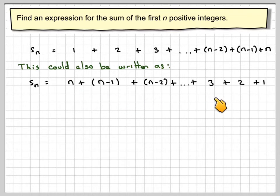n minus 2 plus 3 plus 2 plus 1, we've got the same thing just written backwards. If we add these two we're going to get 2Sn,